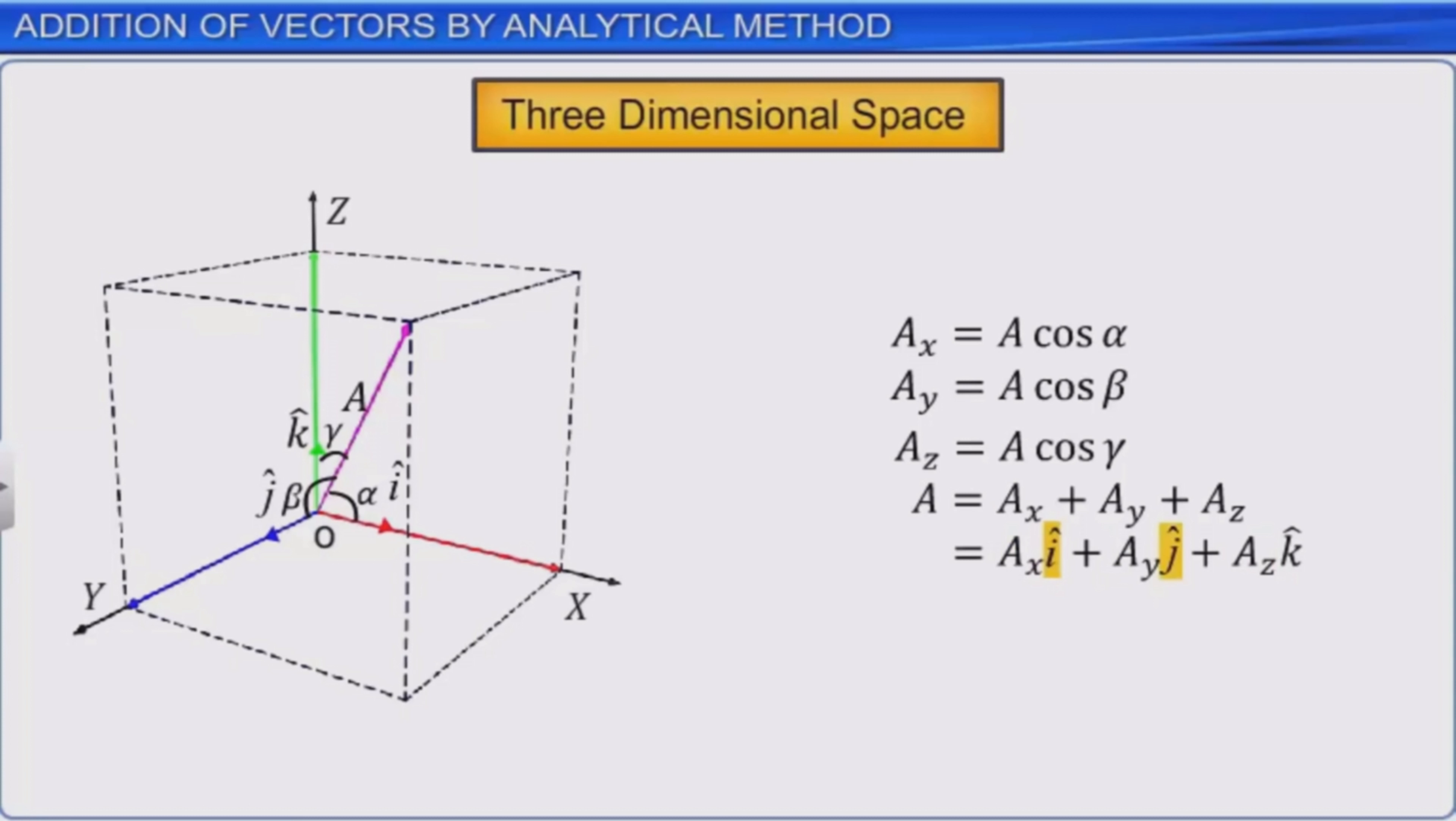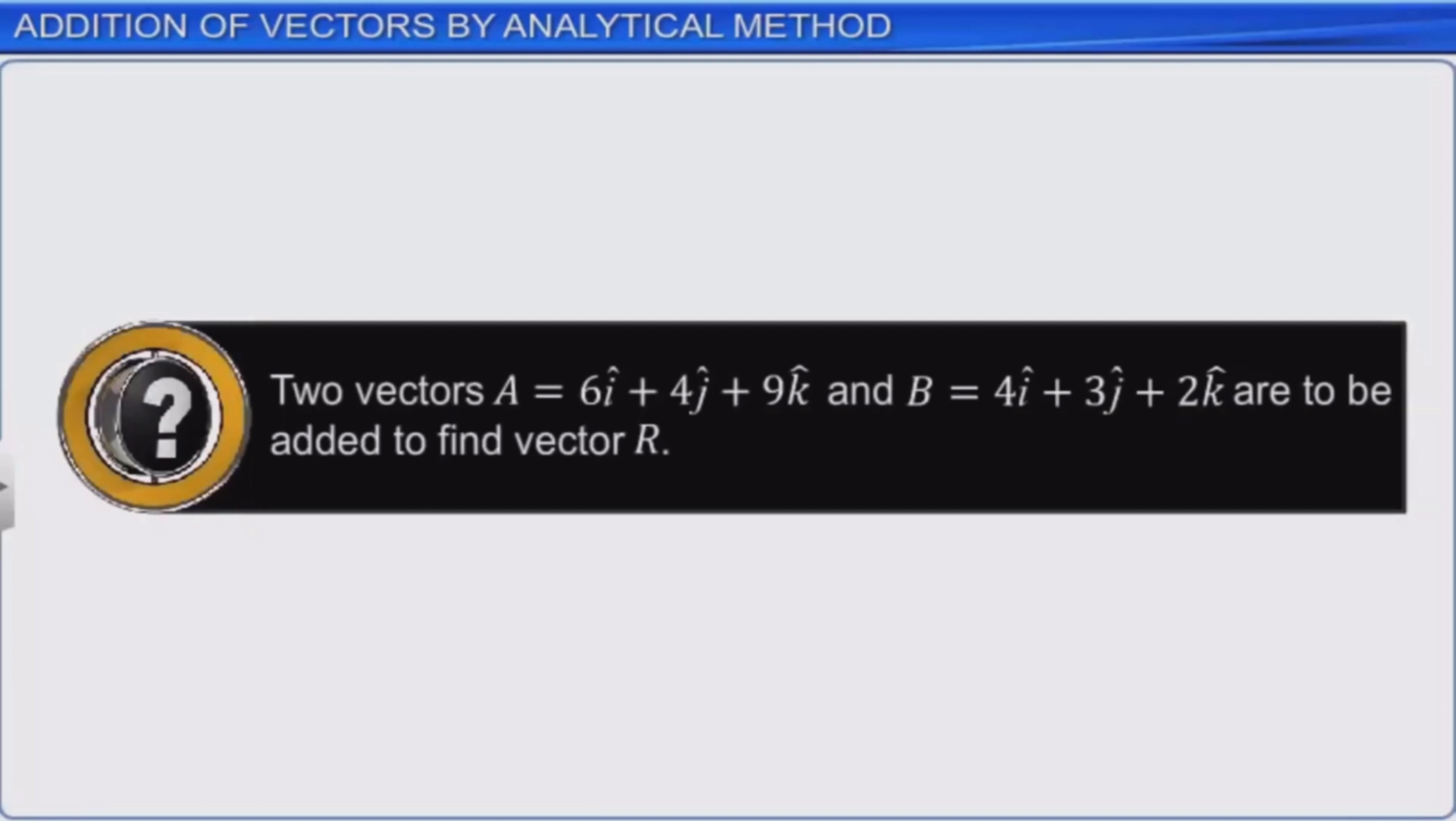The magnitude of A can be written as the square root of Ax square plus Ay square plus Az square. Let us solve a simple problem using isometric graph paper.